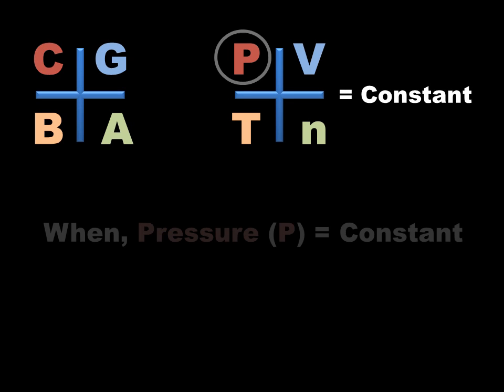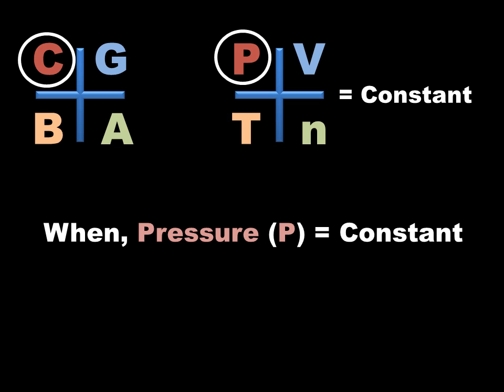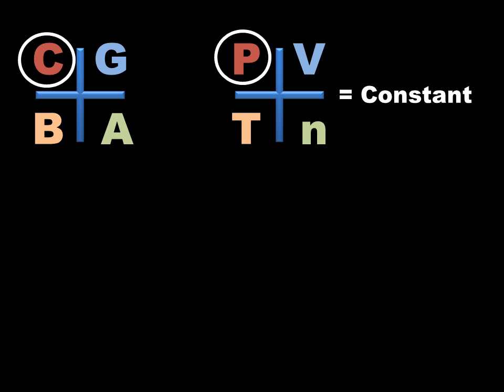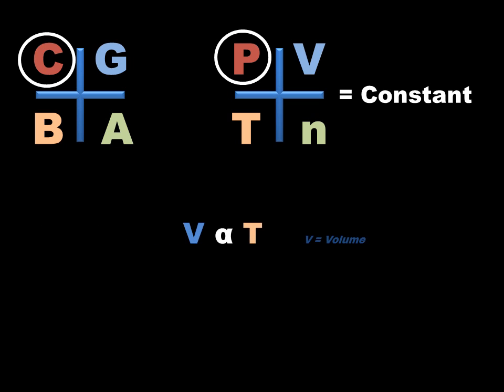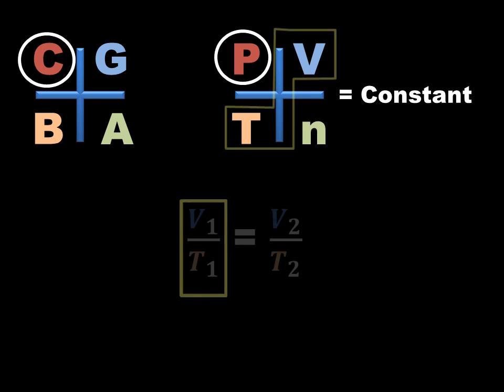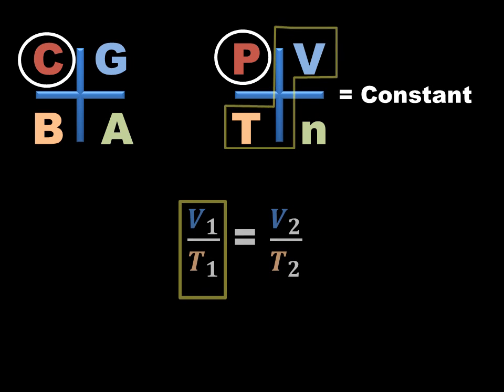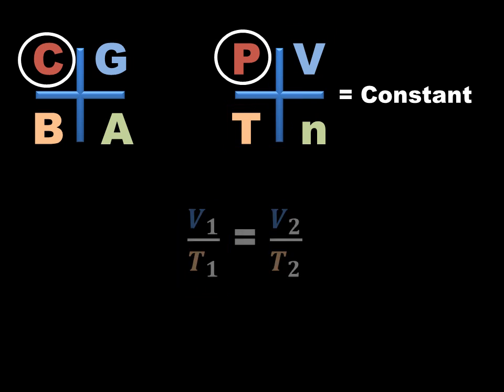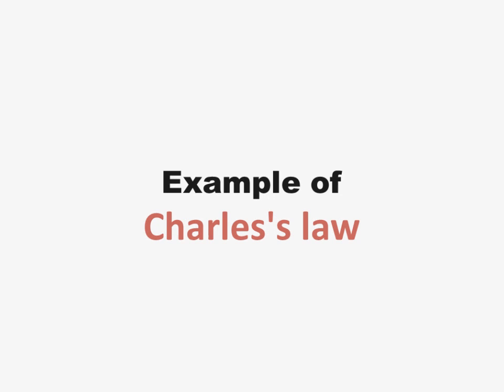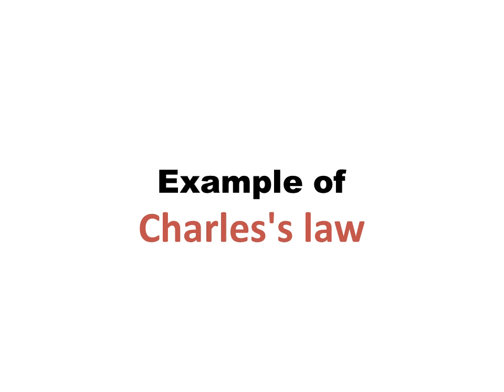When pressure P is constant, this process is governed by Charles' Law. V is directly proportional to T, and the equation is V1 by T1 equals V2 by T2. Example of Charles' Law: